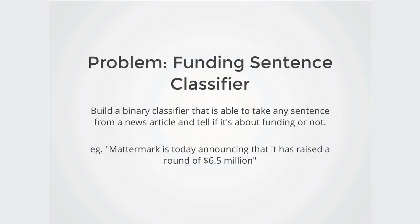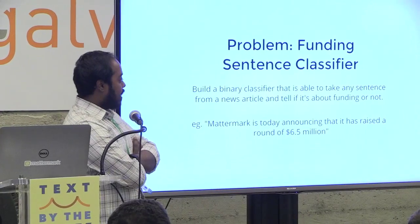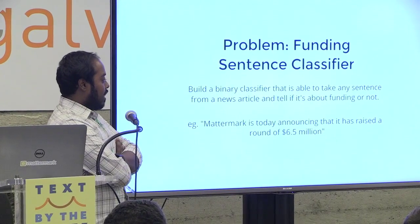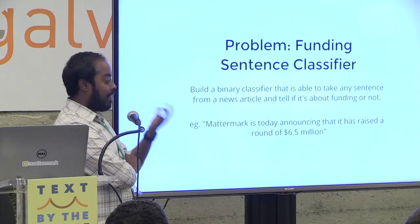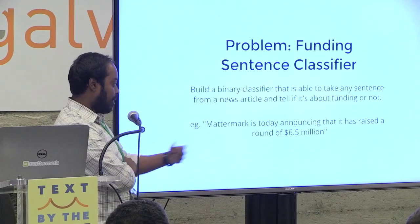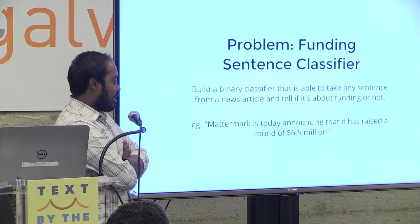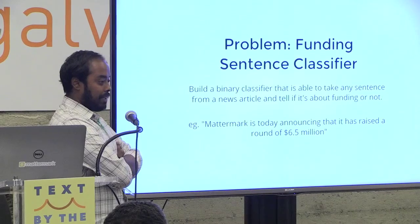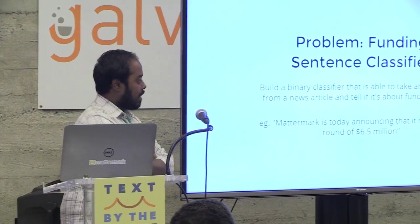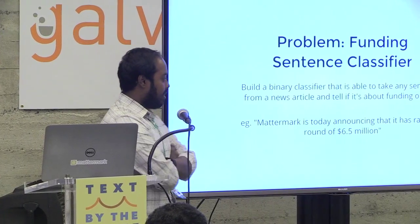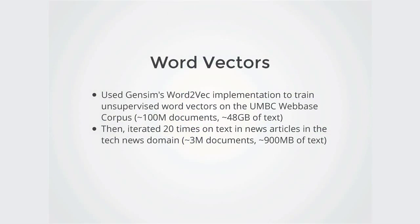Let's talk about our problem at Mattermark. Something we've been working on quite a bit is building a binary classifier that can tell, for any sentence from a news article, whether it's about funding or not. For example: 'Mattermark is today announcing that it has raised a round of $6.5 million.' That's self-explanatory — this way we can start extracting data.